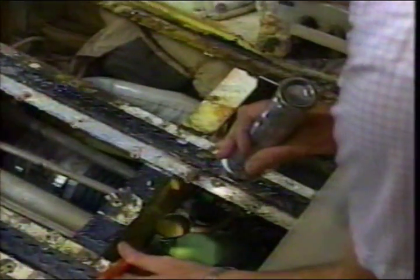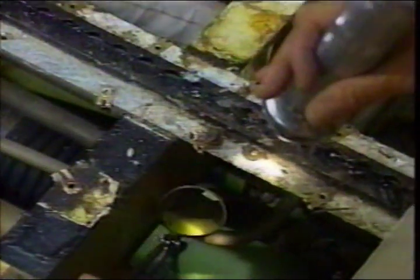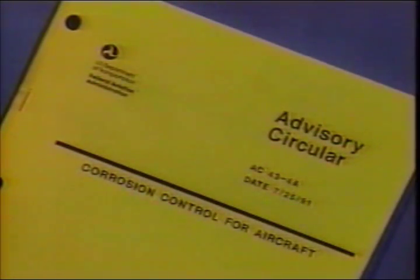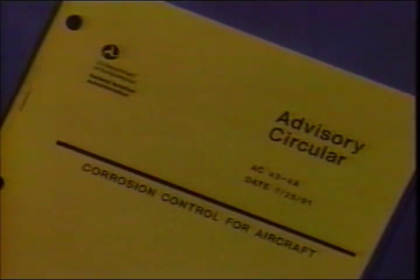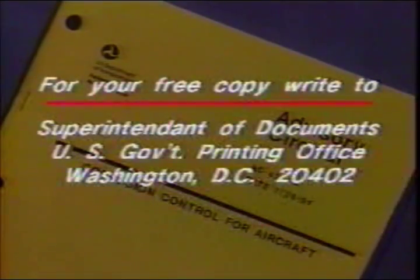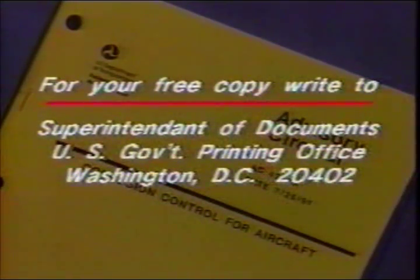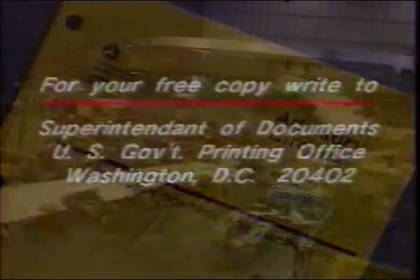In your role as an aircraft mechanic or inspector, you are responsible for recognizing, preventing, and controlling corrosion on your aircraft. This program is based on FAA Advisory Circular AC 43-4A, corrosion control for aircraft. You can get a free copy by writing the Superintendent of Documents, Washington DC. Keep it handy on the job and refer to it during inspections or when you encounter a particular problem with corrosion.